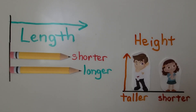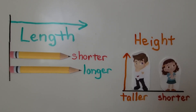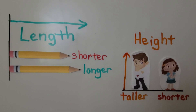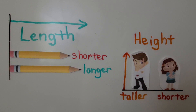So remember that length is different than height. Length tells us how long something is, and height tells us how tall something is. Our next lesson, 11.3, we're going to do some problem solving and direct comparisons. I hope you'll join me. I hope you have a wonderful day.